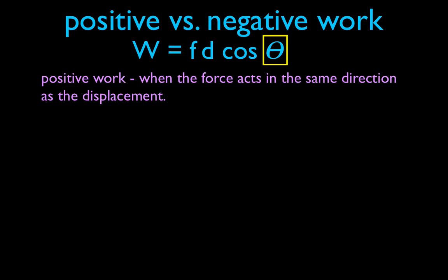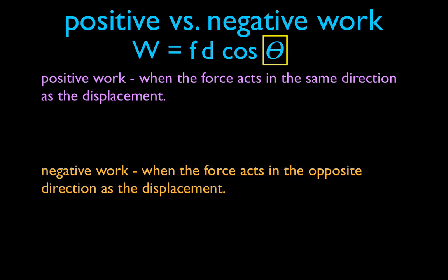Positive work occurs when a force acts in the same direction as the displacement. So if there's an object moving to the right and there's a force pushing it to the right, that force is doing positive work. The most common kind of force that does positive work is an applied force. Negative work is done by a force that acts in the direction opposite to the displacement — the most common example is friction. Negative work doesn't mean less than zero; think of it as a force taking energy out of the system, while positive work puts energy into the system.